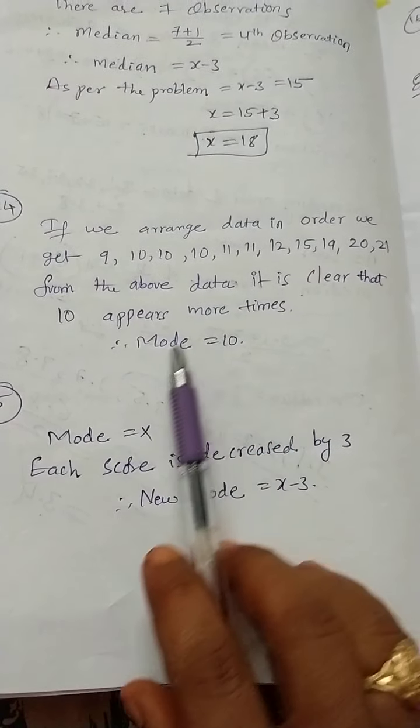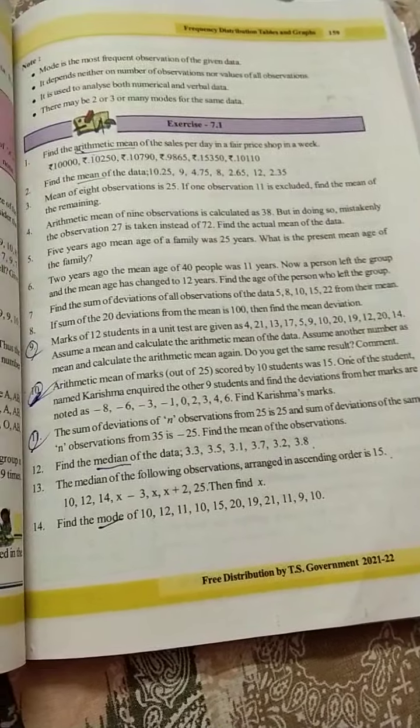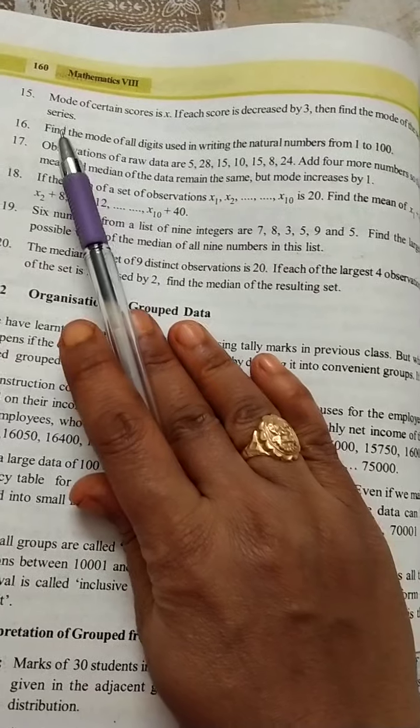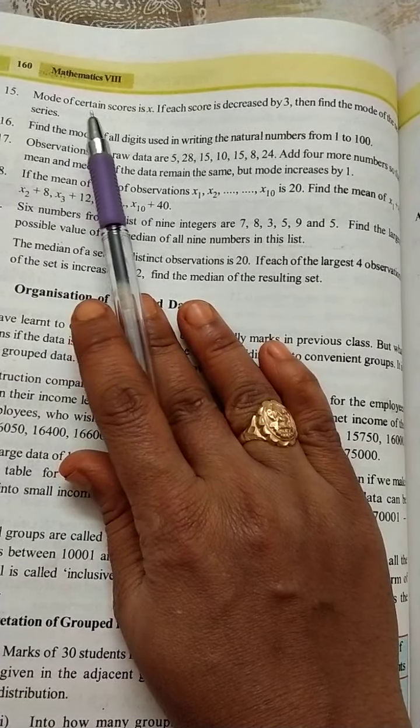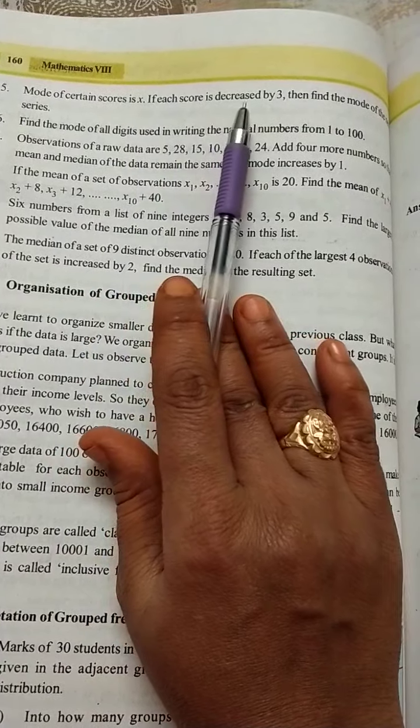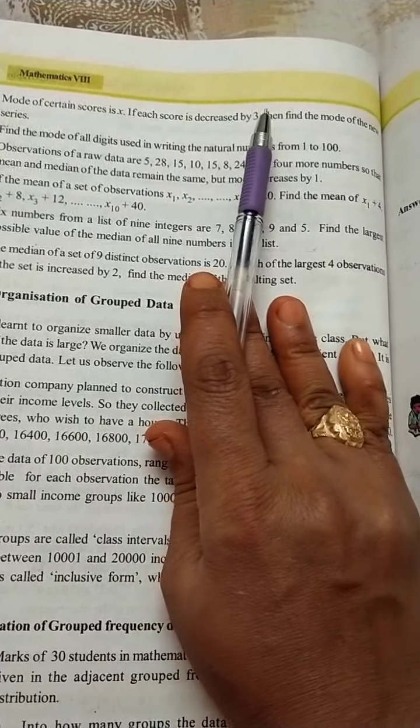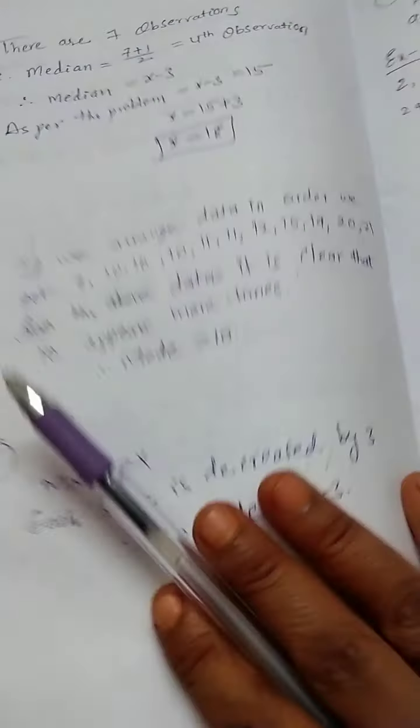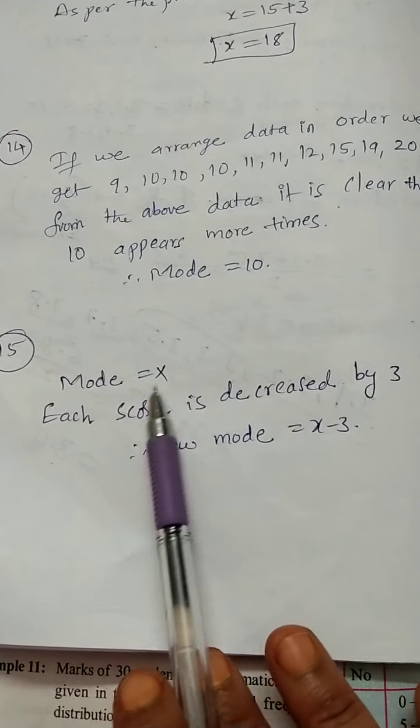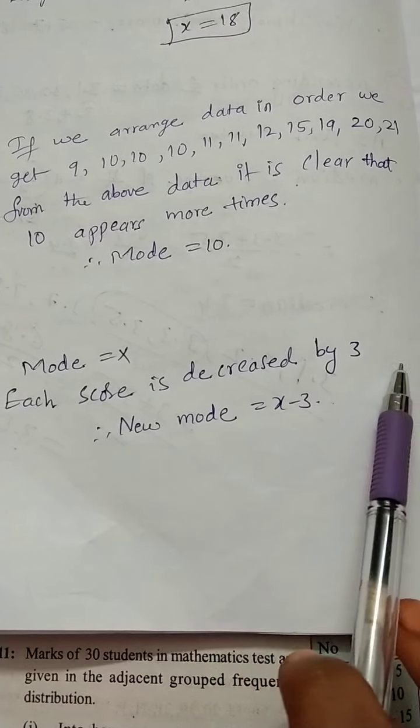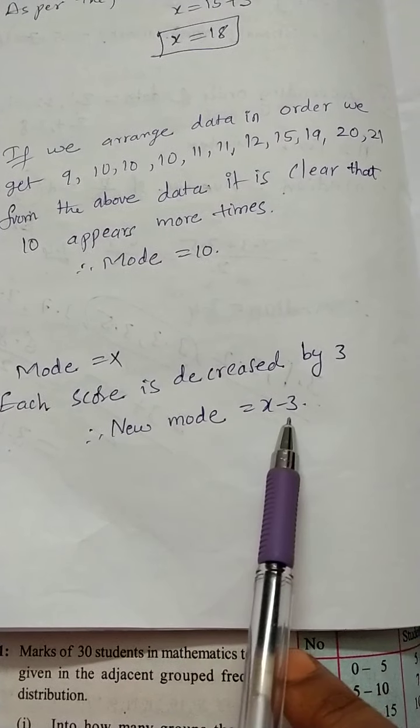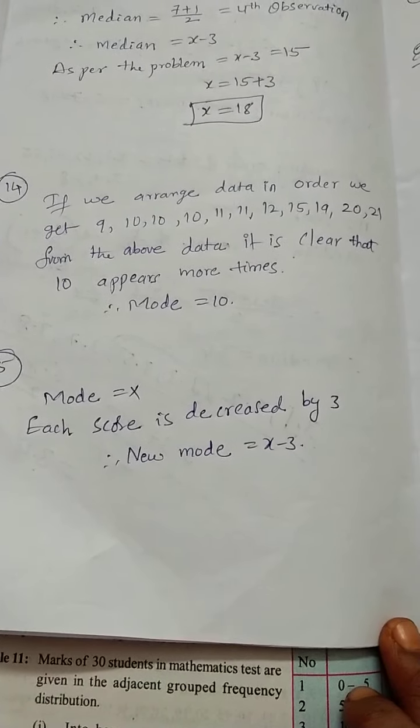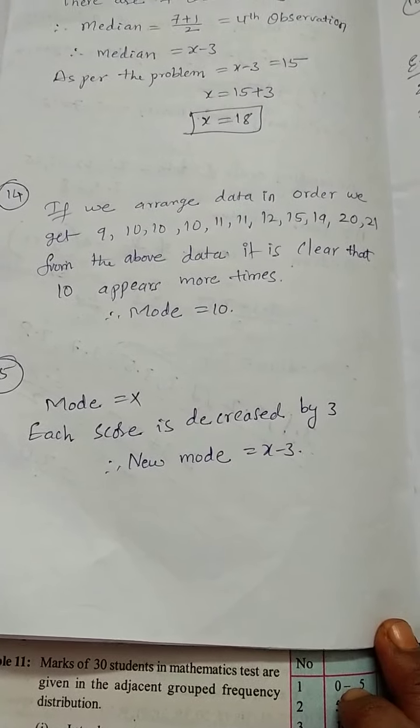Next, Question 15: The mode of certain scores is x. If each score is decreased by 3, then find the mode of the new series. Here, mode is x. Each score is decreased by 3, so the new mode will become x-3. Why? Because 3 is decreasing from the mode, so new mode will become x-3.